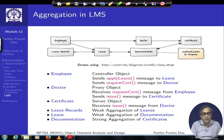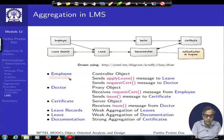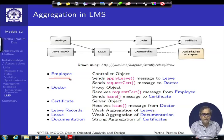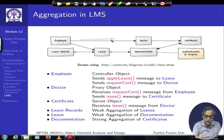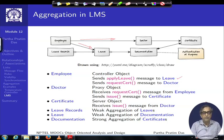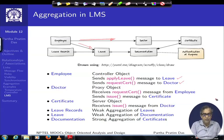Looking at that part of the LMS system, we expect an employee object. The employee decides whether to apply for leave, or if the employee is a lead or manager, decides whether a leave should be approved. This means the employee object is the driver in the system, so we identify it as a controller object. It sends messages along the employee-to-leave link — for example, an apply-leave message where an executive or lead is applying for leave. The link from employee to doctor could be a request-certificate link, where an employee not keeping good health goes to the doctor to request a certificate.